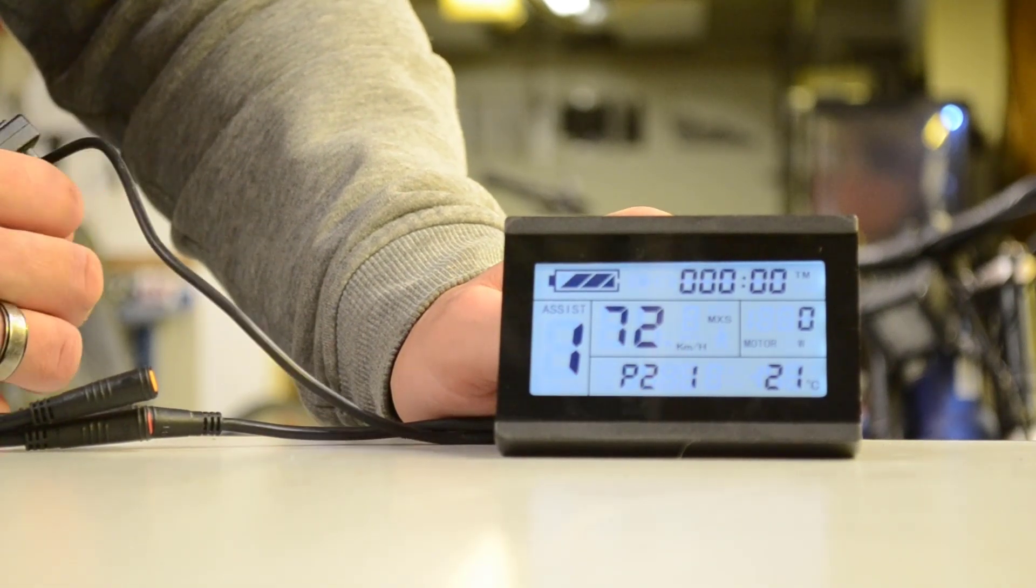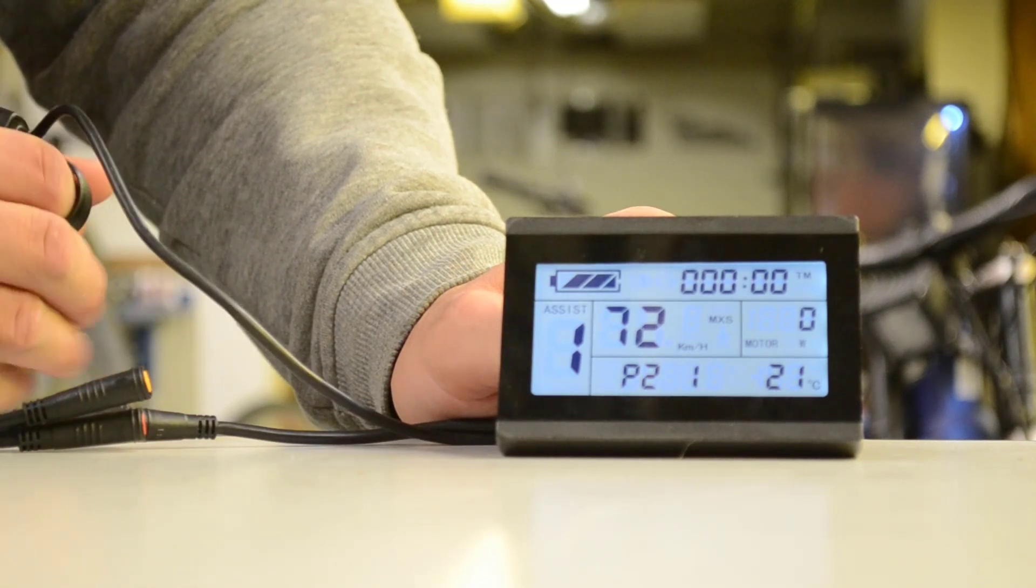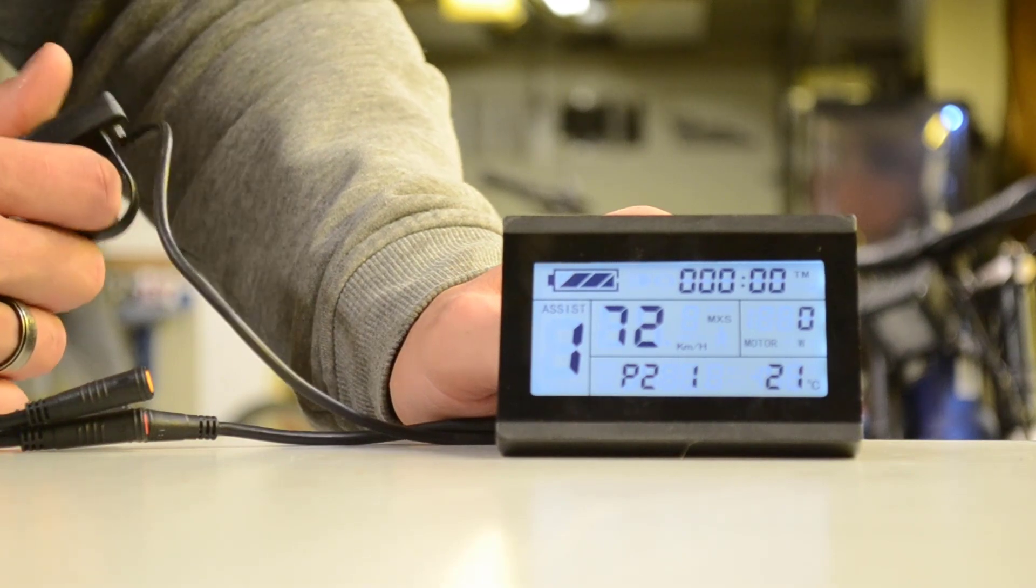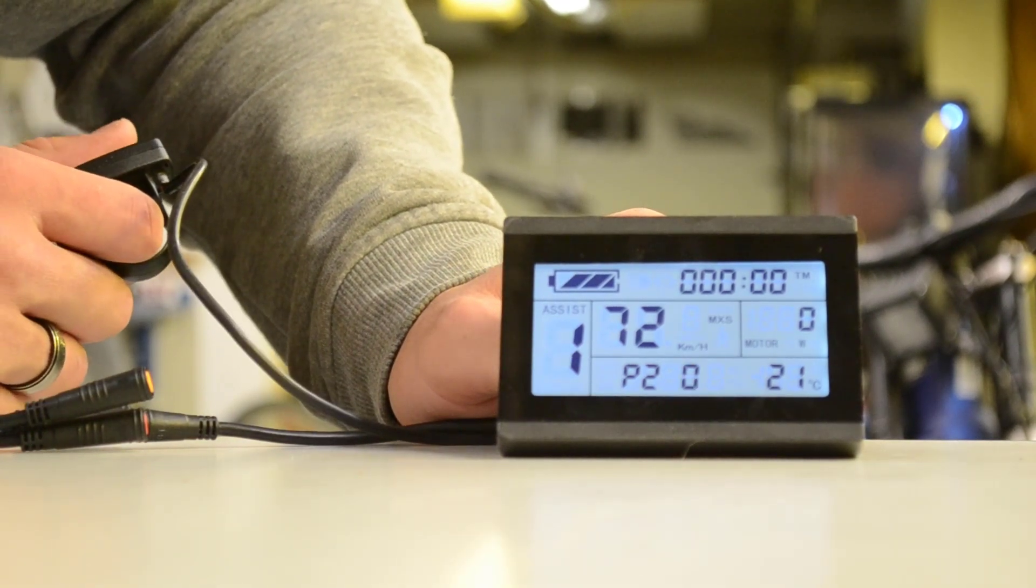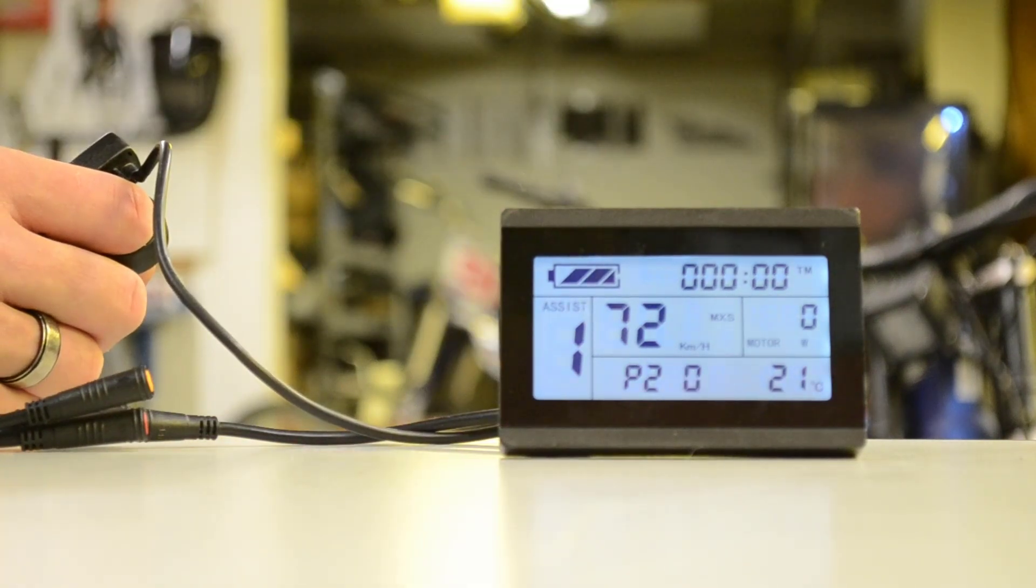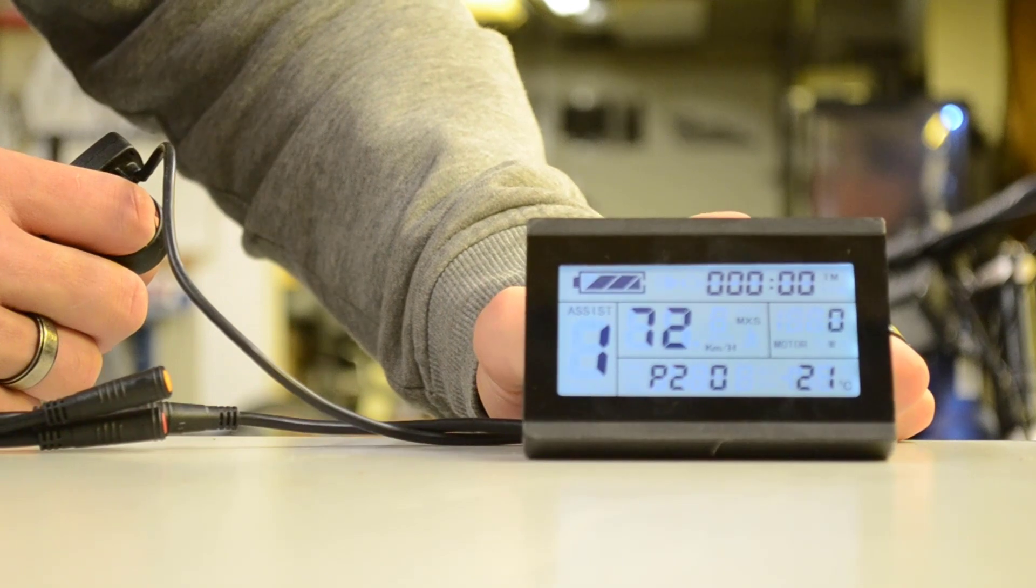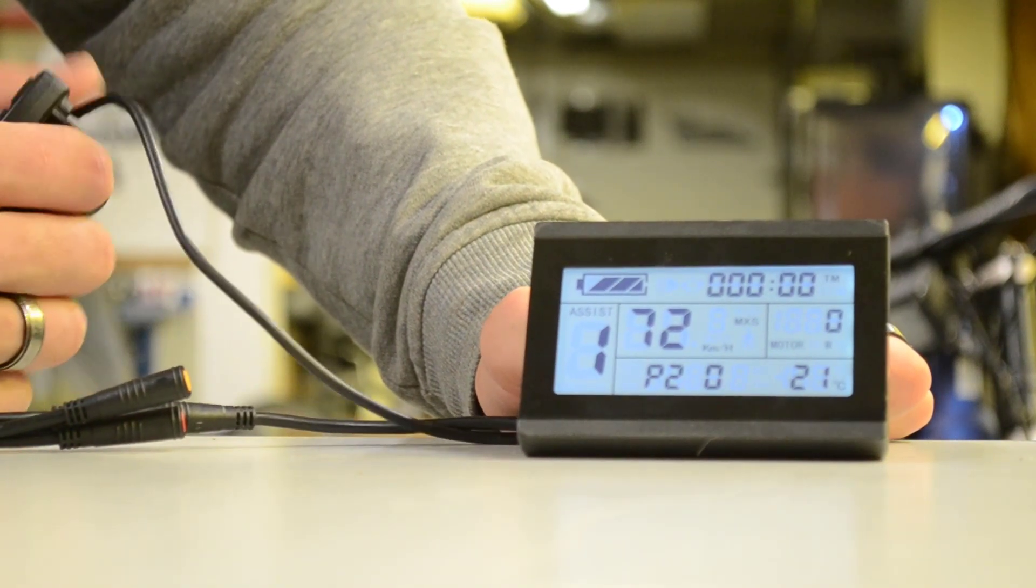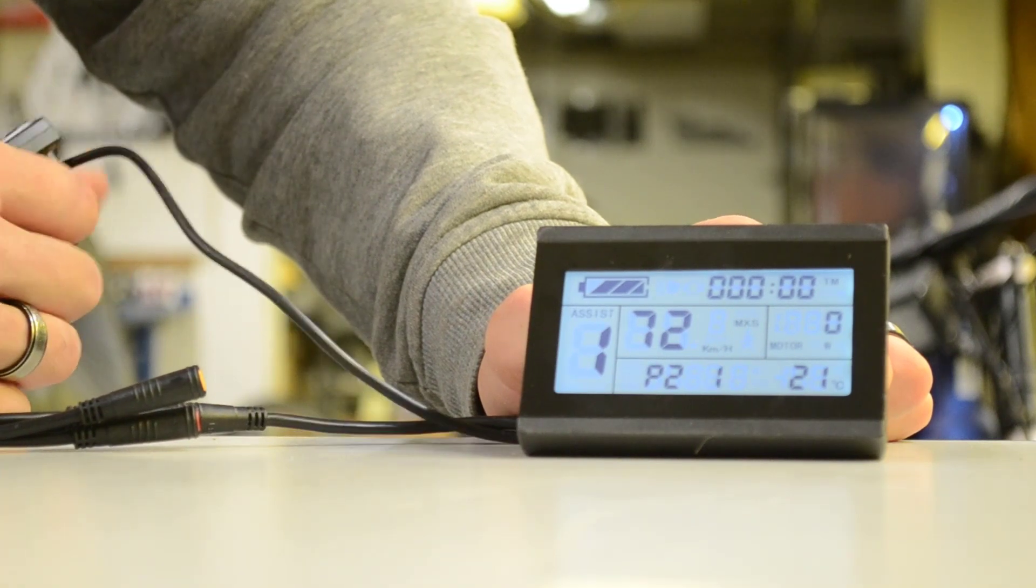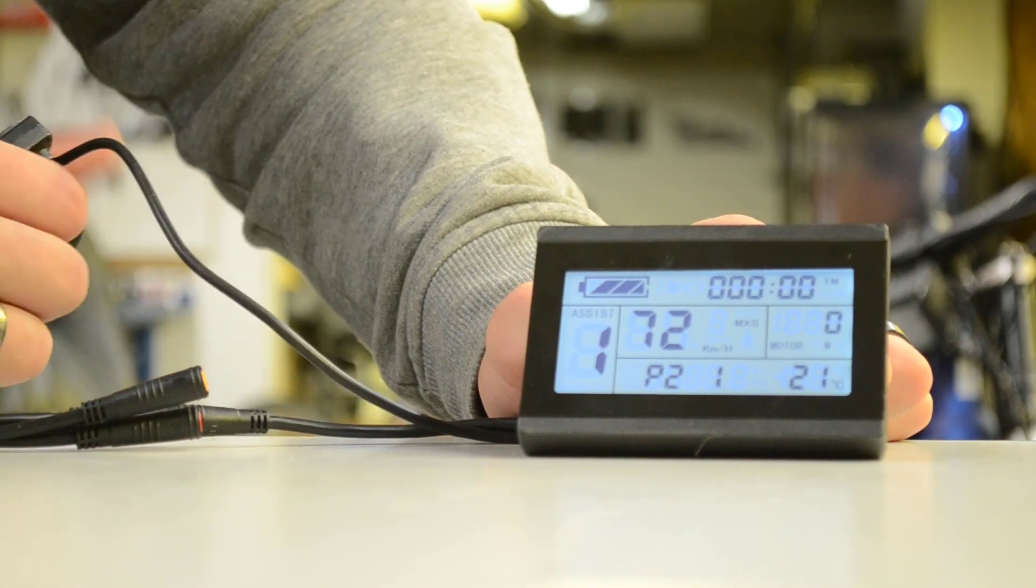P2 is going to be how many pulses that the motor gives per revolution. So, a lot of times, a direct drive motor, you can set it to zero because it doesn't give any pulses. It's just registering one revolution is through the hall sensor, I believe. And then, if you set it to 1, it means that whatever speed... Usually, 1 to 6 is for a geared motor.